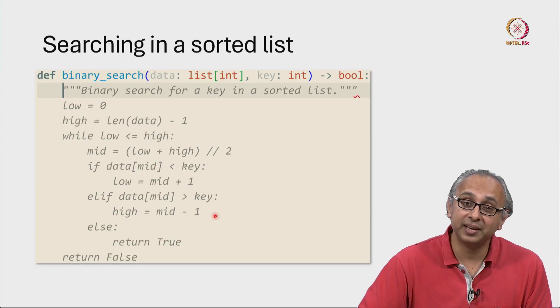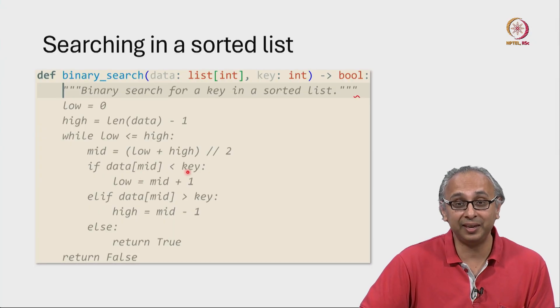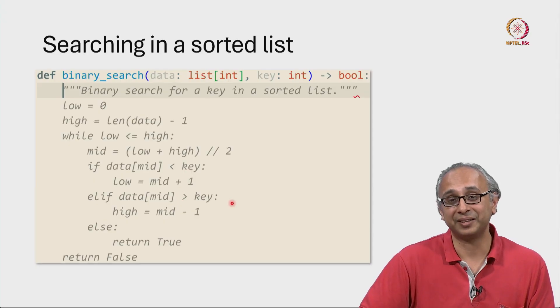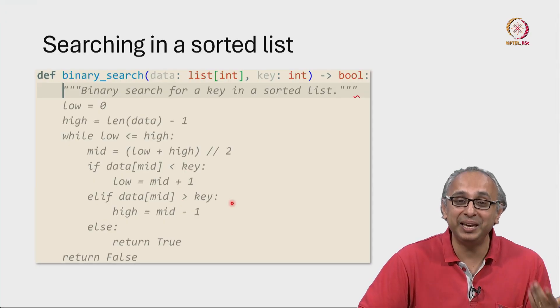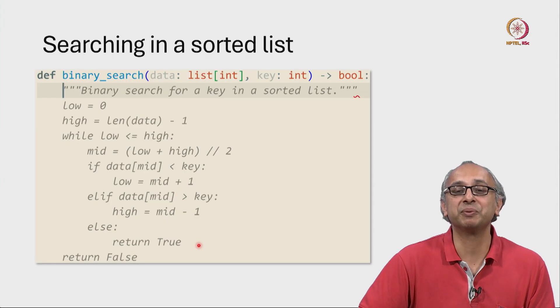And in the last case, that is where the value at the mid point is neither less than the key nor greater than the key. And that must mean it is equal to the key and in that case we return true.